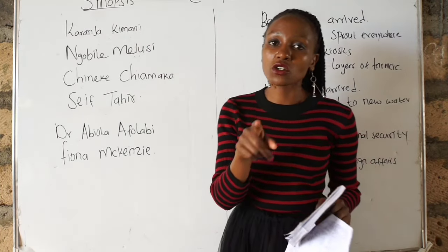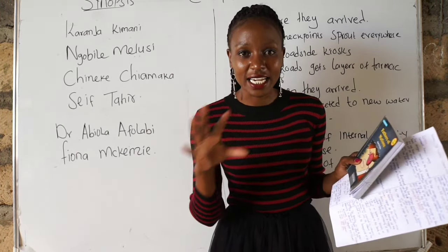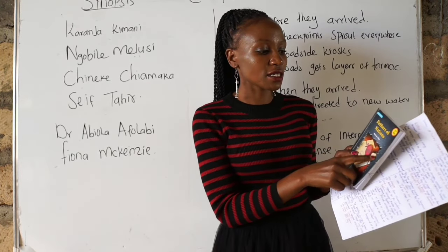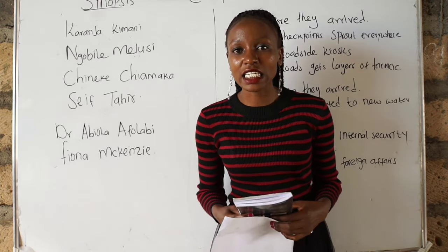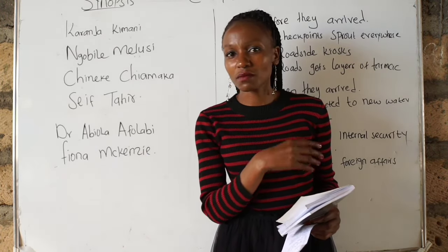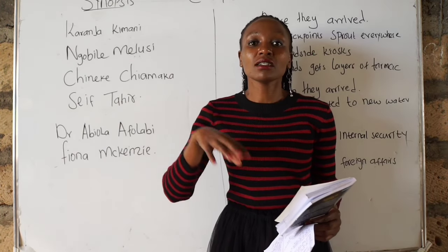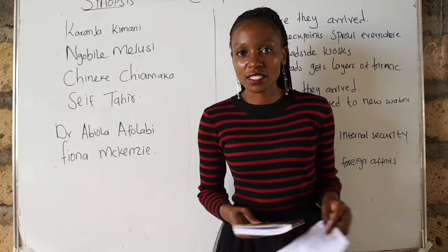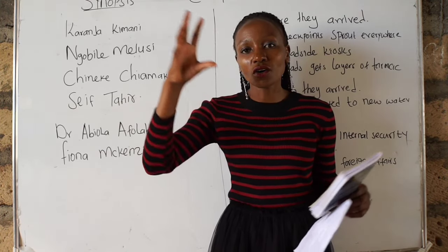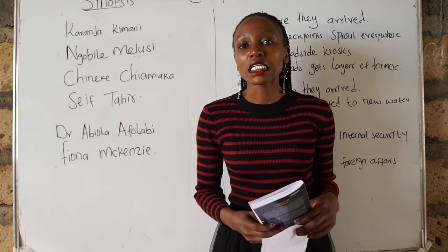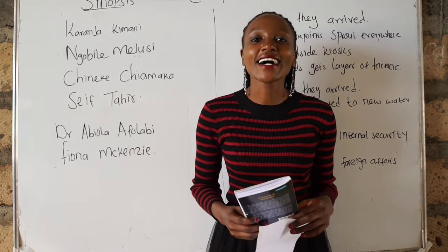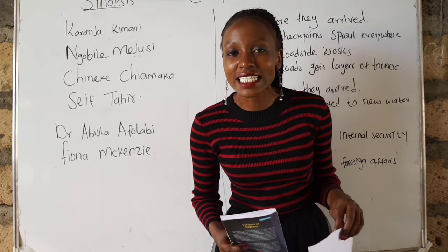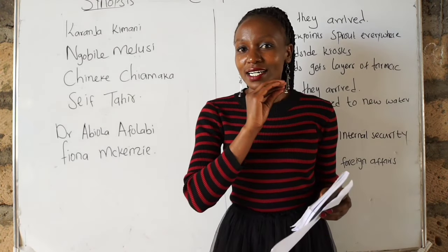Before we go to the chapter one synopsis, let us talk about the title. The title is 'Fathers of Nations' — in Kiswahili, 'Baba Wataifa,' which is both singular and plural. The father of a nation is the leader of the nation. In our country Kenya, we have His Excellency William Samuel Ruto as our father of nation. So generally the book is about leadership — leadership in Africa.